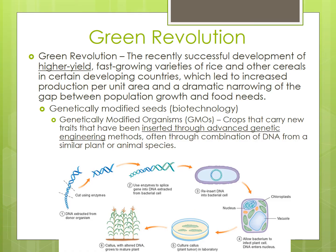The genetic modification could produce new properties, like better response to fertilizer or resistance to disease, drought, or pesticides. As with hybrid seeds, GMO varieties were developed for the major cereal grains like wheat and rice. Later, GMO varieties of corn, soybeans, cotton, cassava, among others, were developed.